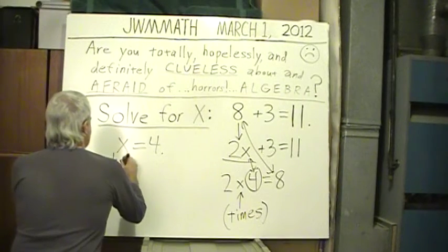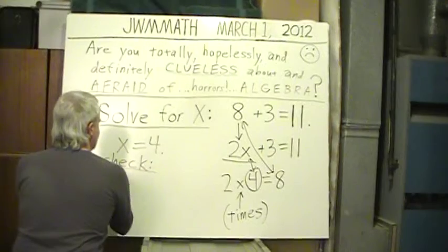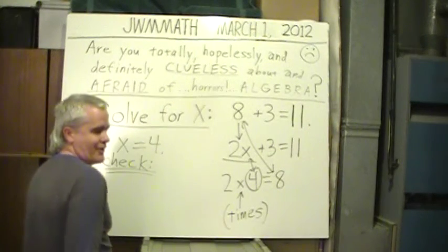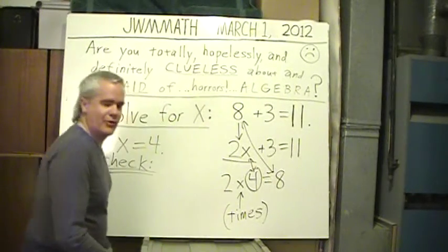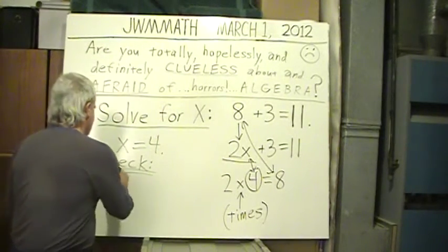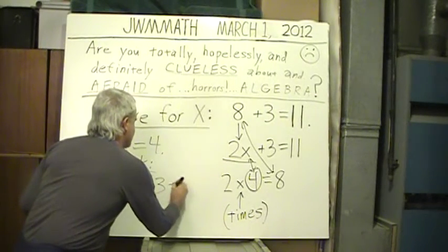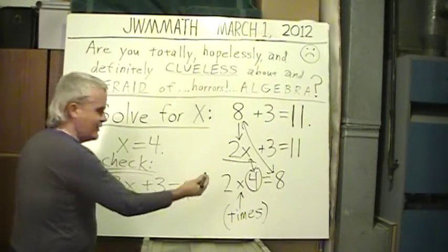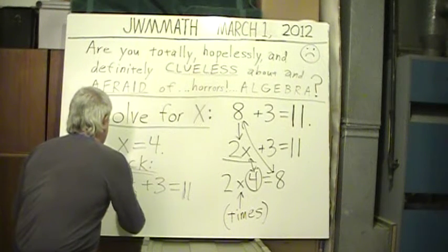And another technique you find in mathematics is being able to check. Verify the solution. See if 4 really is correct. See if any calculation or arithmetic errors were possibly made. Well, put down the original equation. 2x plus 3 equals 11. And substitute wherever you see the x.